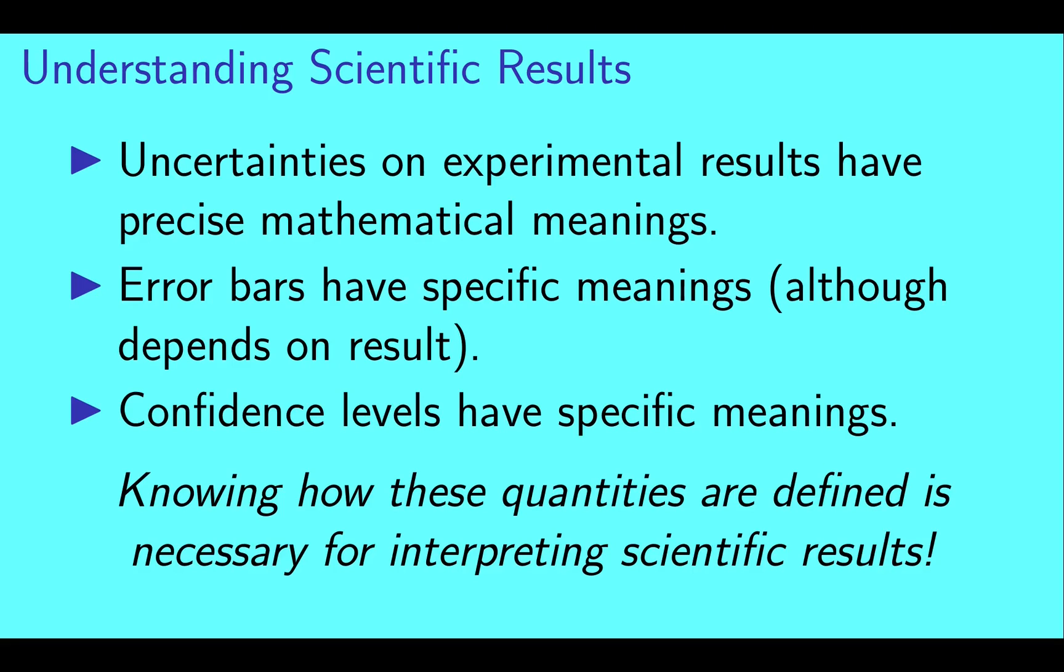Uncertainties on experimental results have precise mathematical meanings. Error bars have specific meanings, although you have to be careful that you know which definition is being used for a specific result. Confidence levels also have specific meanings. Knowing how these quantities are defined is necessary for correctly interpreting scientific results.